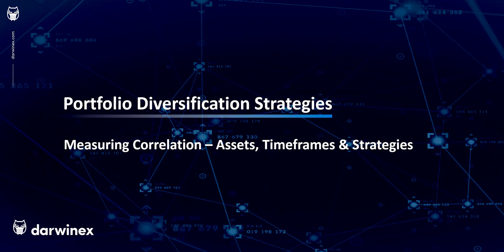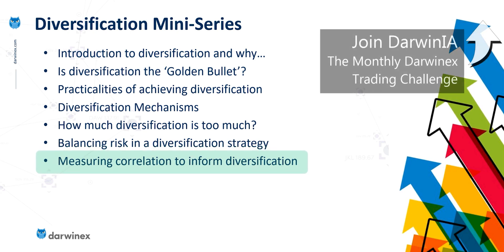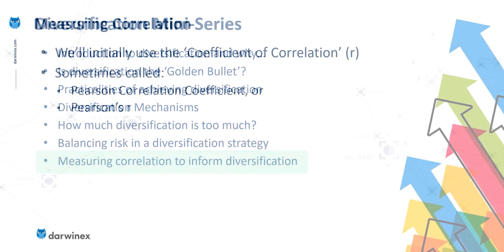Following on from the last episode where we looked at the techniques you can use to balance risk across a diversified portfolio, we now move on to the final section of this mini-series which is measuring correlation. Because this is such an important topic, there will be several episodes where I go through all of the techniques you will need across all of the different types of components. So let's now take a look at a couple of the techniques that we'll use to do this.